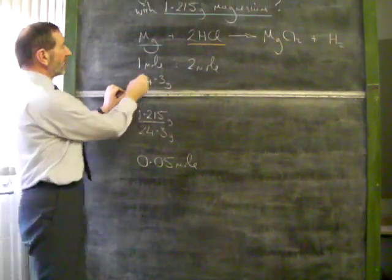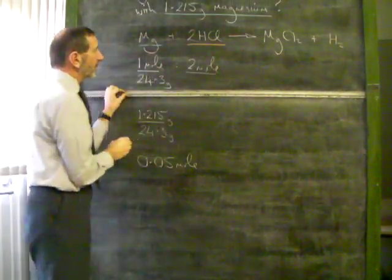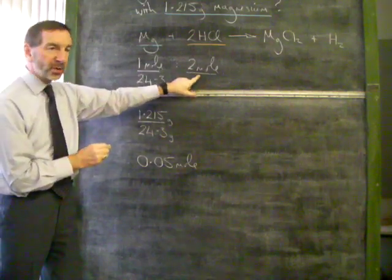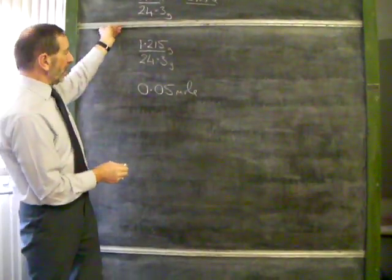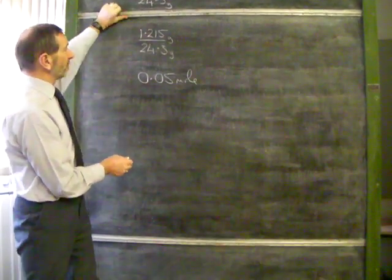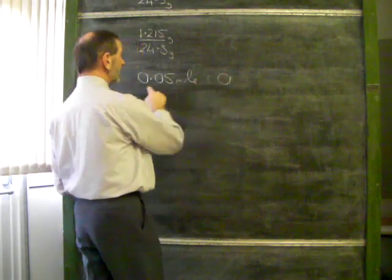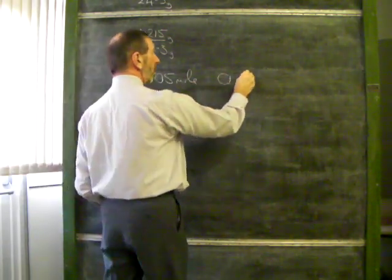If you look back here, the ratio is 1 to 2. So if one mole of magnesium reacts, there must be 2 moles of acid. Using that simple 1 to 2 ratio, if 0.05 moles of magnesium reacts, then the amount of acid we have will be twice this, which is 0.1 of a mole.